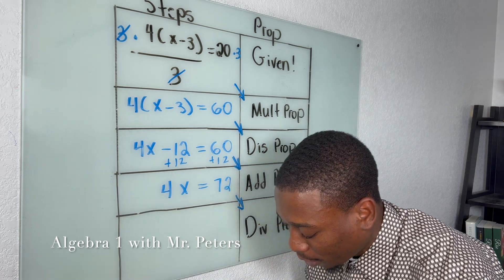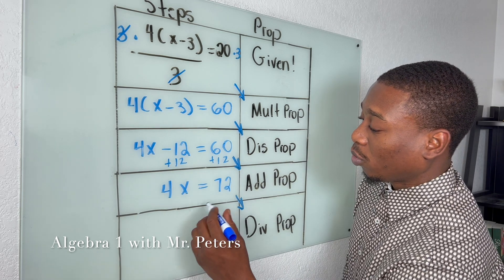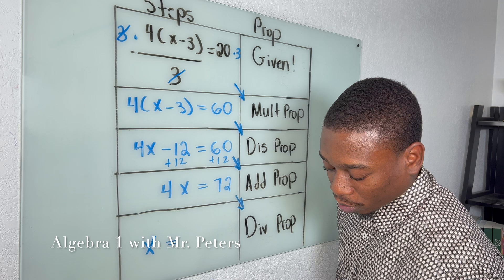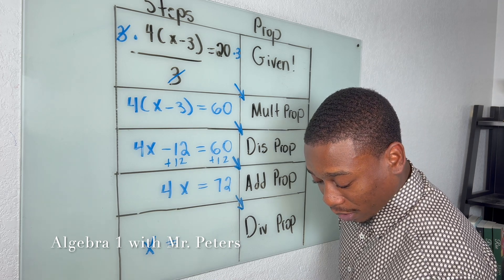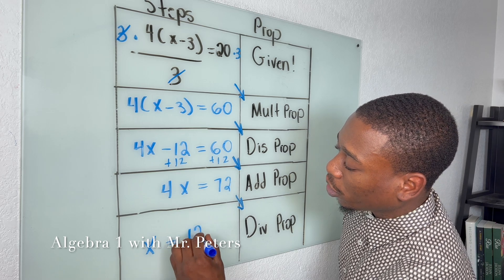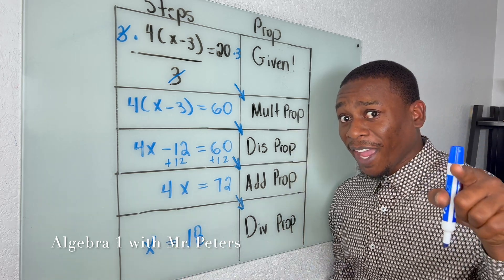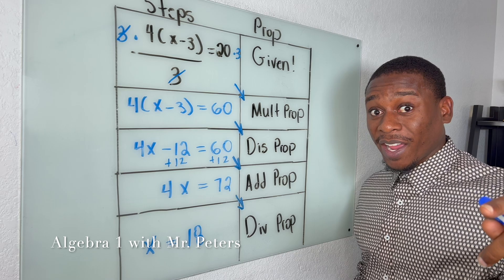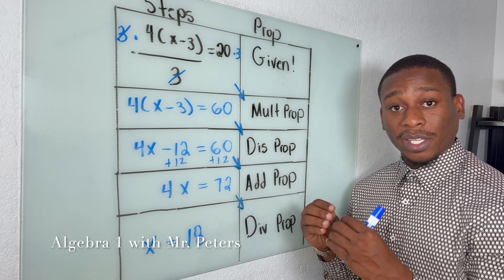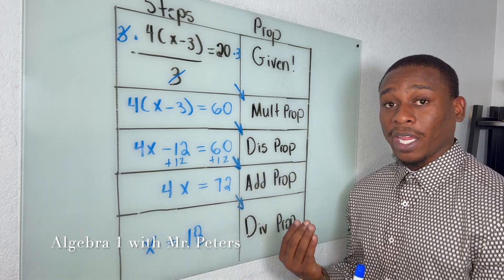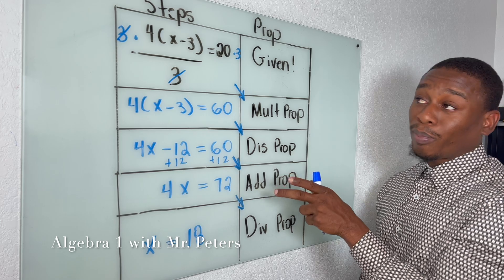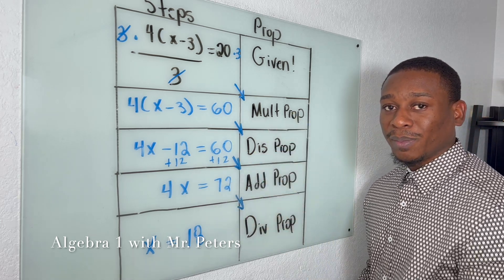In my last step, we're going to divide by four and we're going to get x is equal to — I think x is going to be equal to 18. Fact check me, I'm just guessing off the top of my head. But please make sure you know how to do it from both angles: if they give you the steps and list the properties, or if they give you the properties and need you to list the steps.